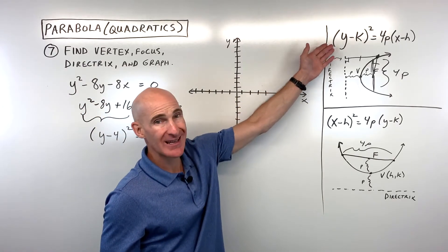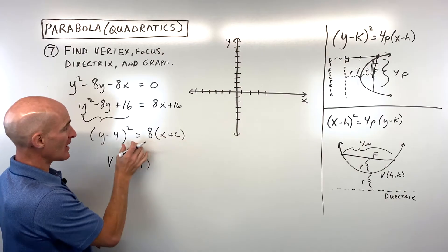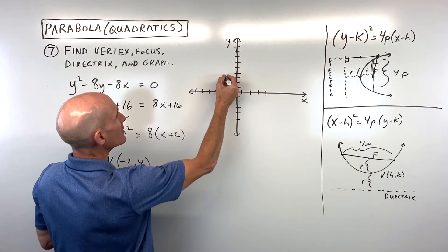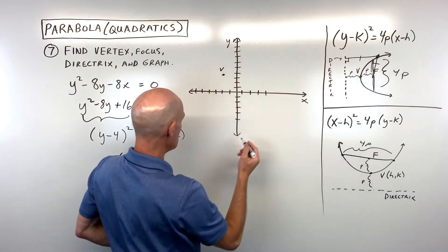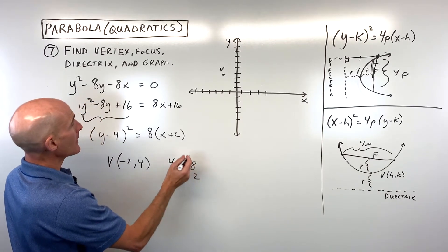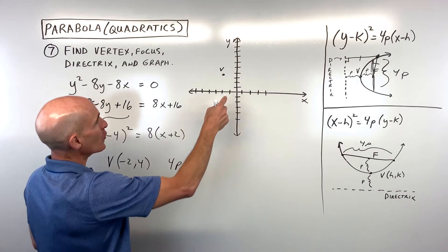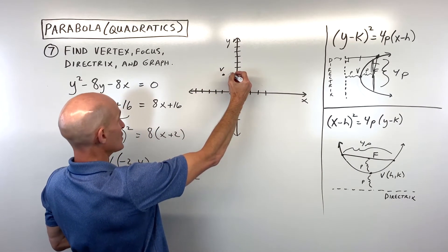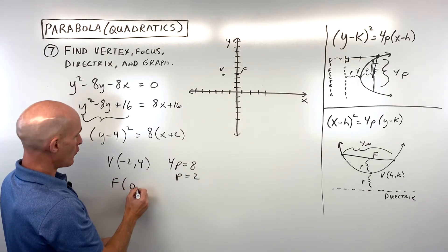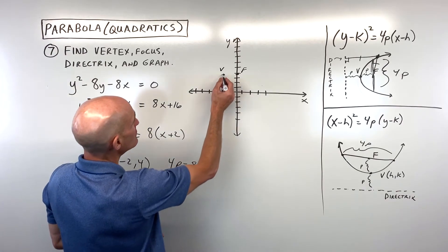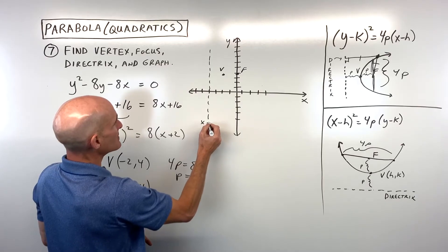Now in standard form, we can identify the vertex at (-2, 4) — remember the opposite signs. We find 4p equals 8, so p equals 2. It's a y-squared type, and since p is positive, it opens to the right. Going right 2 from the vertex puts the focus at (0, 4). Going left 2 gives the directrix: x equals negative 4.